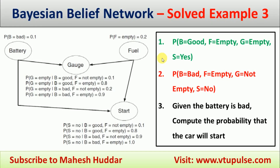Welcome back to the machine learning tutorial. In this video I will discuss how to calculate probabilities using a Bayesian belief network. This is solved example number three. We have been given four nodes: the first is battery, second is fuel, third is gauge, and fourth is start. Battery and fuel do not depend on anything, but the probability of gauge depends on battery as well as fuel, and similarly the probability of start depends on battery and fuel.